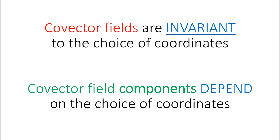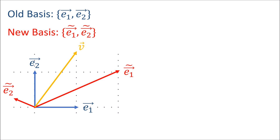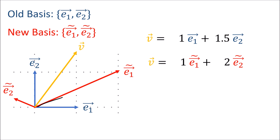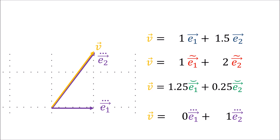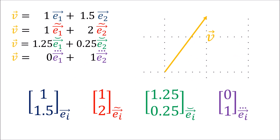This is the main point of the video: covector fields are invariant to the choice of coordinates, but the covector field components do depend on the choice of coordinates. This is just like with simple vectors — if we take a vector v and measure it using different sets of basis vectors, we get different components: for example (1, 1.5) with the blue basis, (1, 2) with the red basis, (1.25, 0.25) with the green basis, and (0, 1) with the purple basis. The vector itself is invariant, but the components depend on the basis.